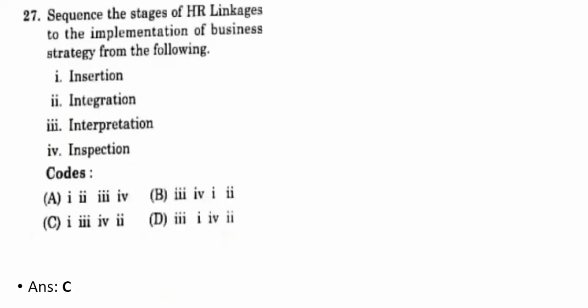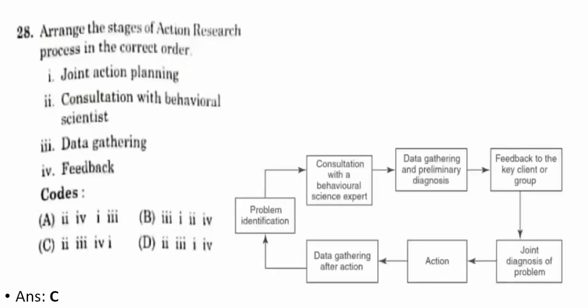Twenty-seventh question: sequence the stages of HR linkages to the implementation of business strategy. The correct option is C — the sequence is: insertion, interpretation, inspection, and integration.